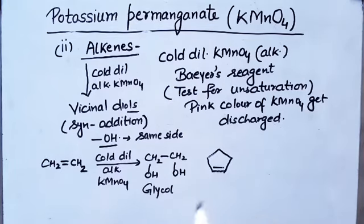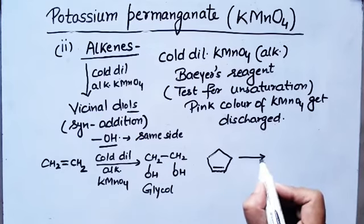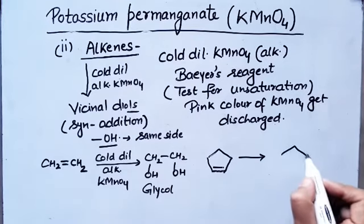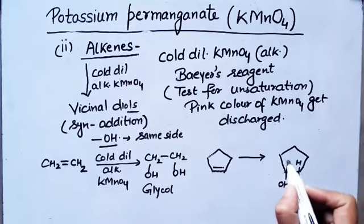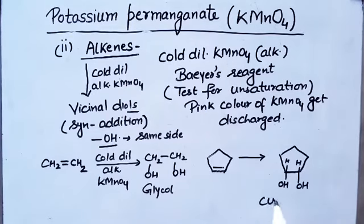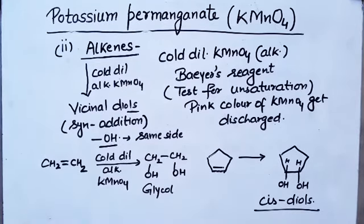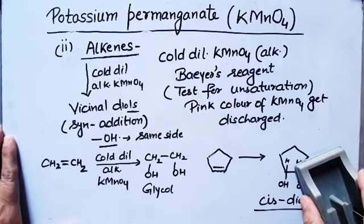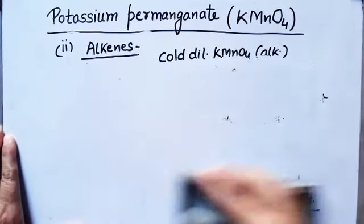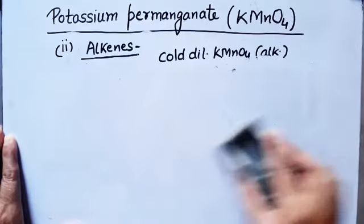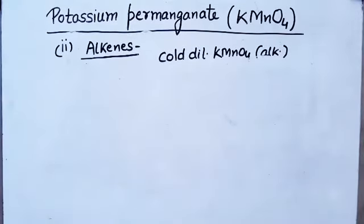If you take cyclopentene and add cold dilute alkaline KMnO₄, then cyclopentene will change into cyclopentene diol, and that diol will be a cis diol. So cis diols are formed whenever you use cold dilute alkaline KMnO₄ — syn addition always occurs.